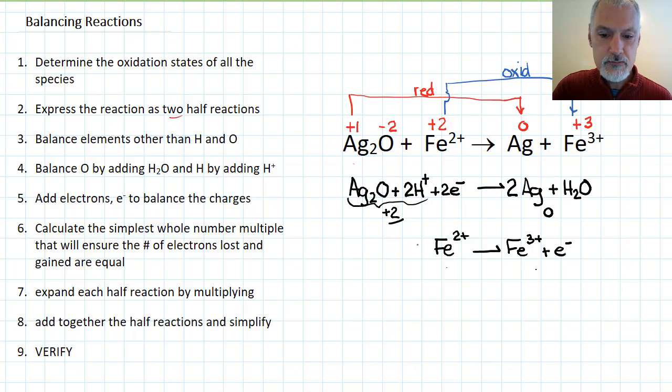I now want to put these two reactions together. And to do so I have to make sure that the number of electrons lost and gained are equal. So with two electrons here I'm going to have to double this equation to match the number of electrons lost and gained. Then we'll add them together.